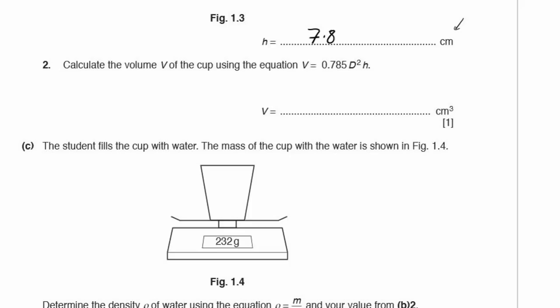Part 2. Calculate the volume V of the cup using the equation V equals 0.785 d squared times H. That's 0.785 times 6.0 squared multiplied by 7.8, and that gives me a value of 220.